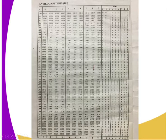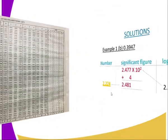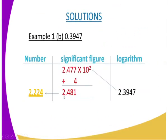Now we look up the difference column headed 7. Moving across row .39 to difference column 7, the value is 4. We are told to add, so we add 4: 7 plus 4 equals 11, carry 1; 1 plus 7 equals 8. The four and two carry down along with the decimal point, giving 2.481.